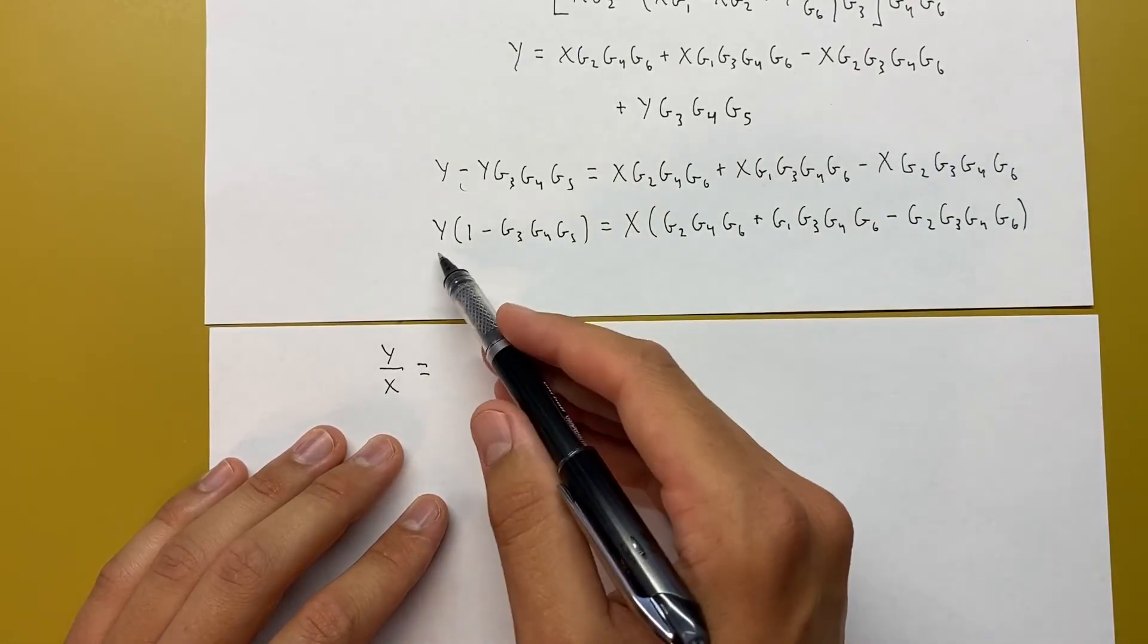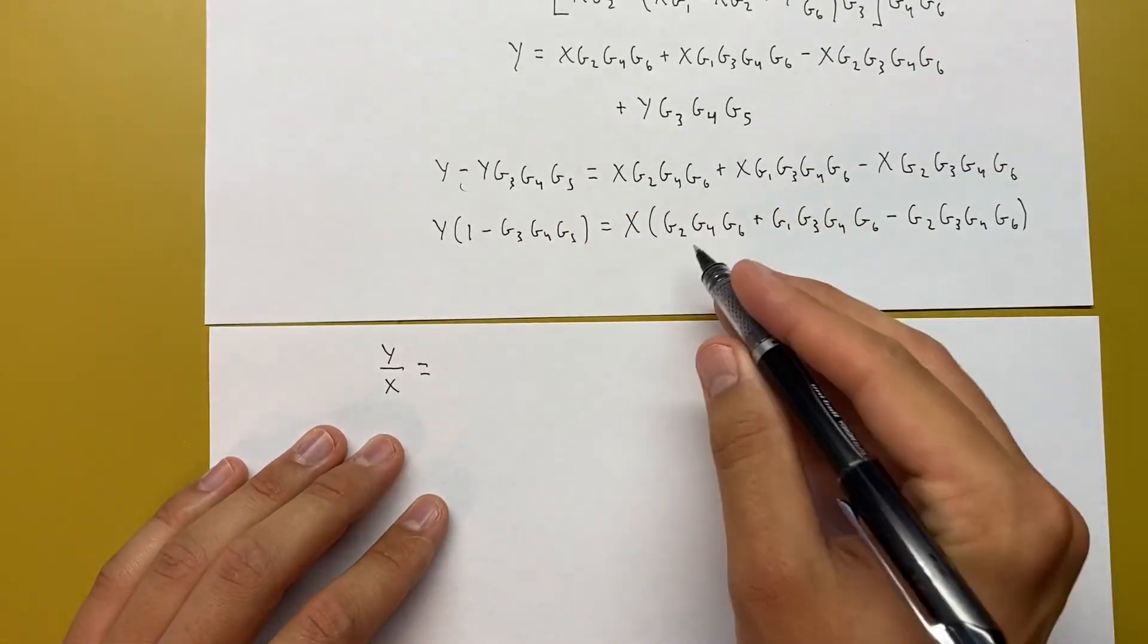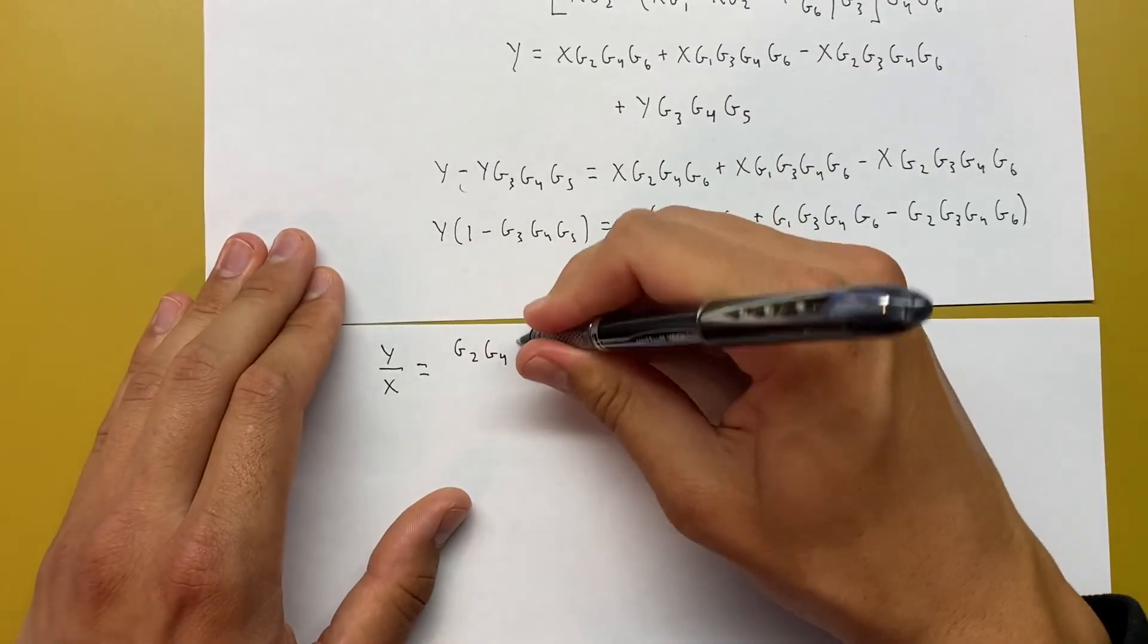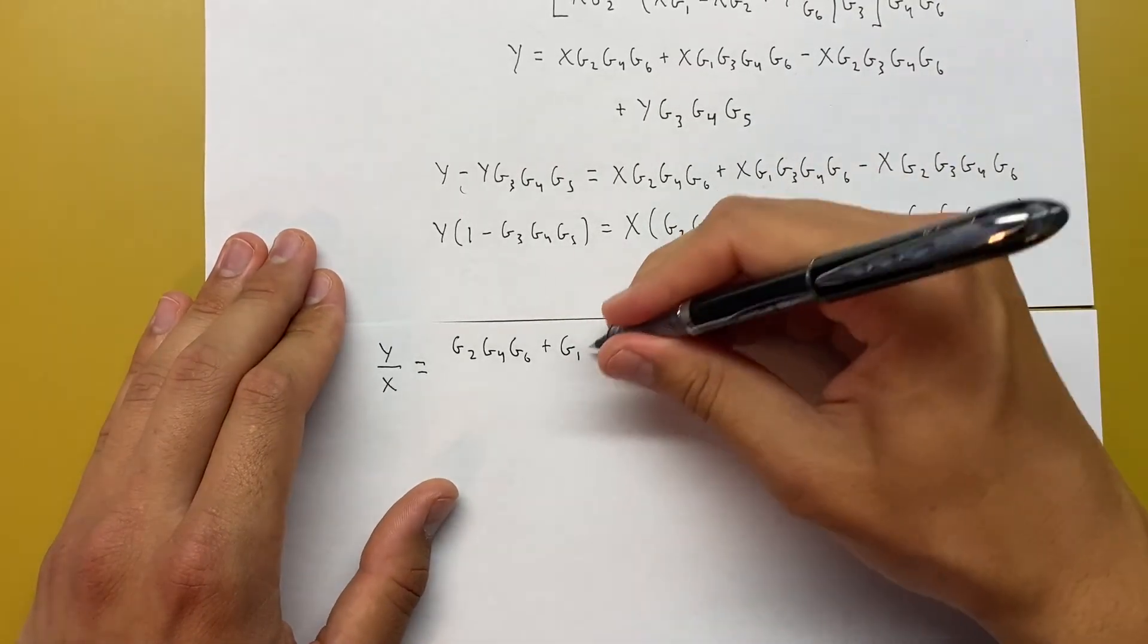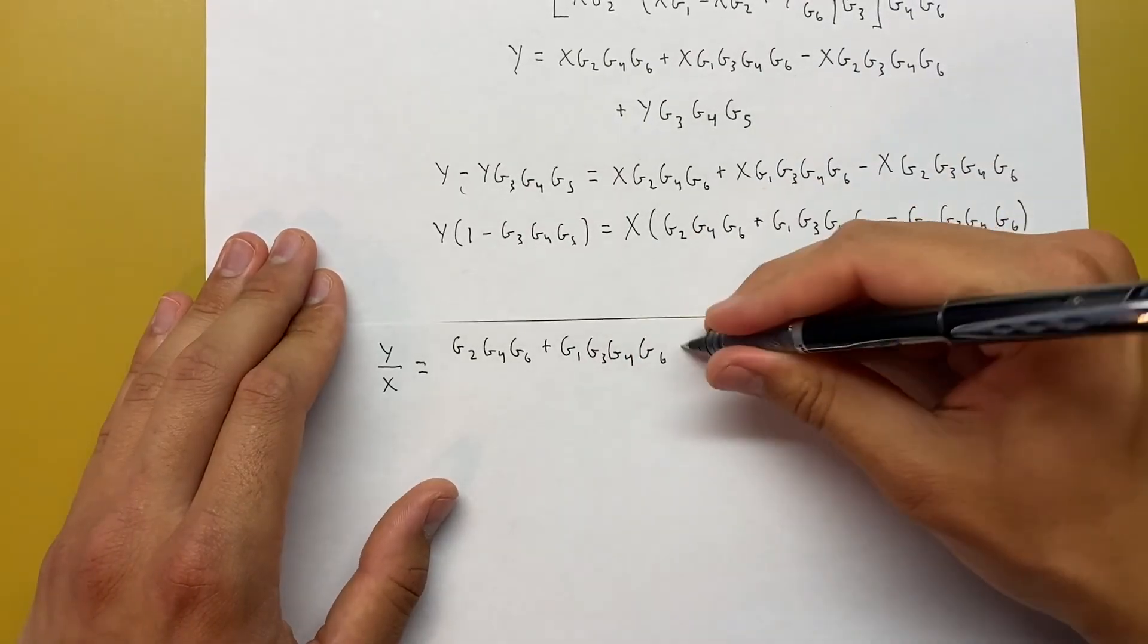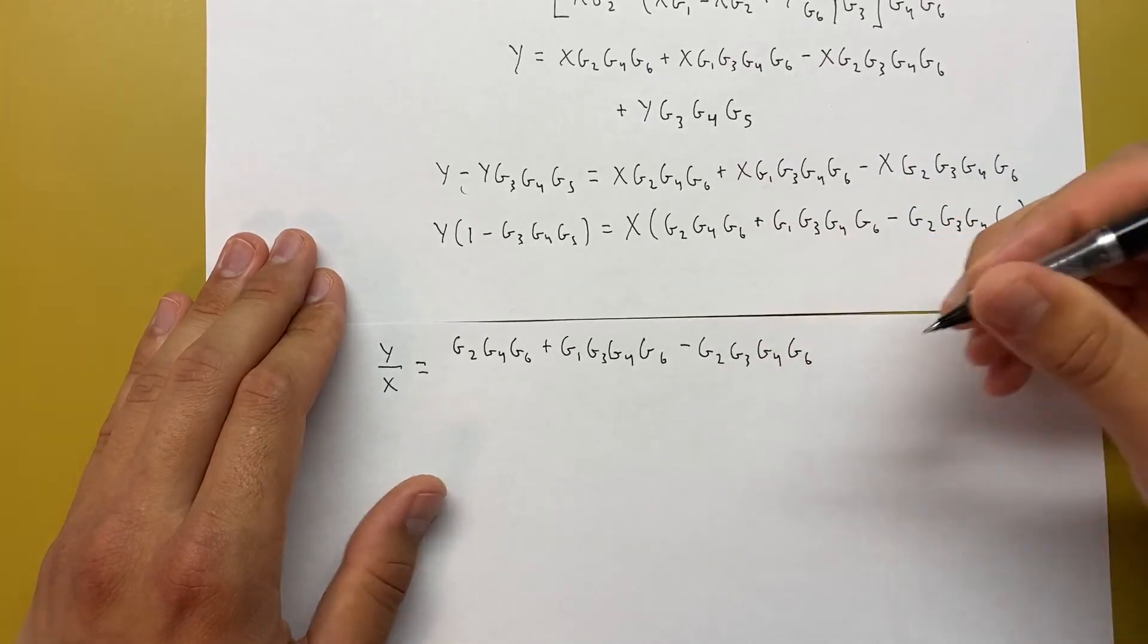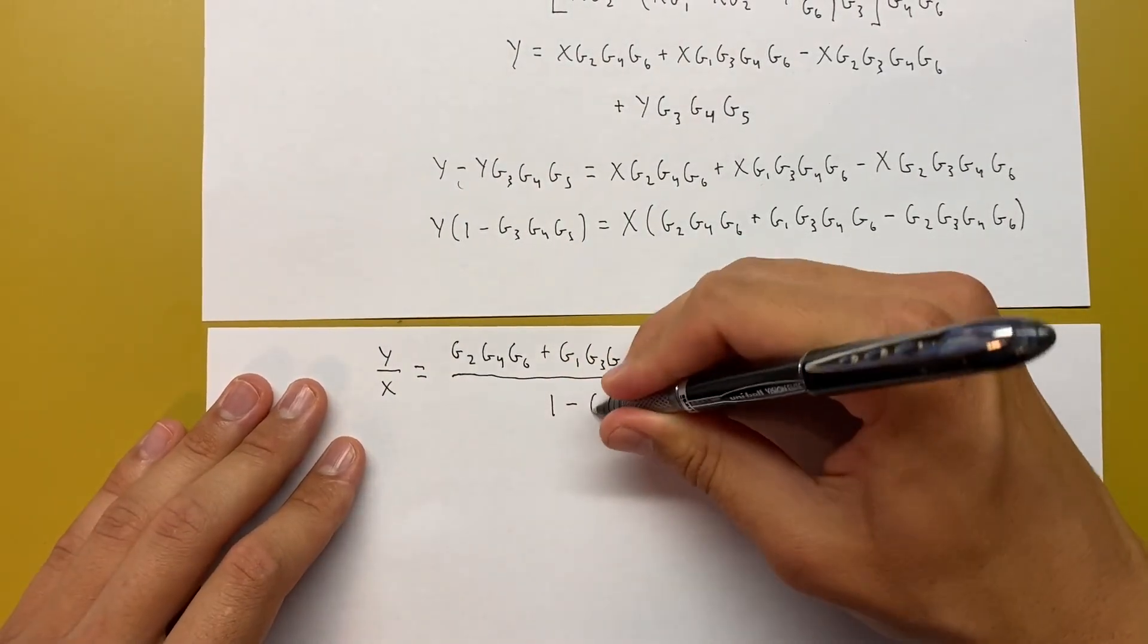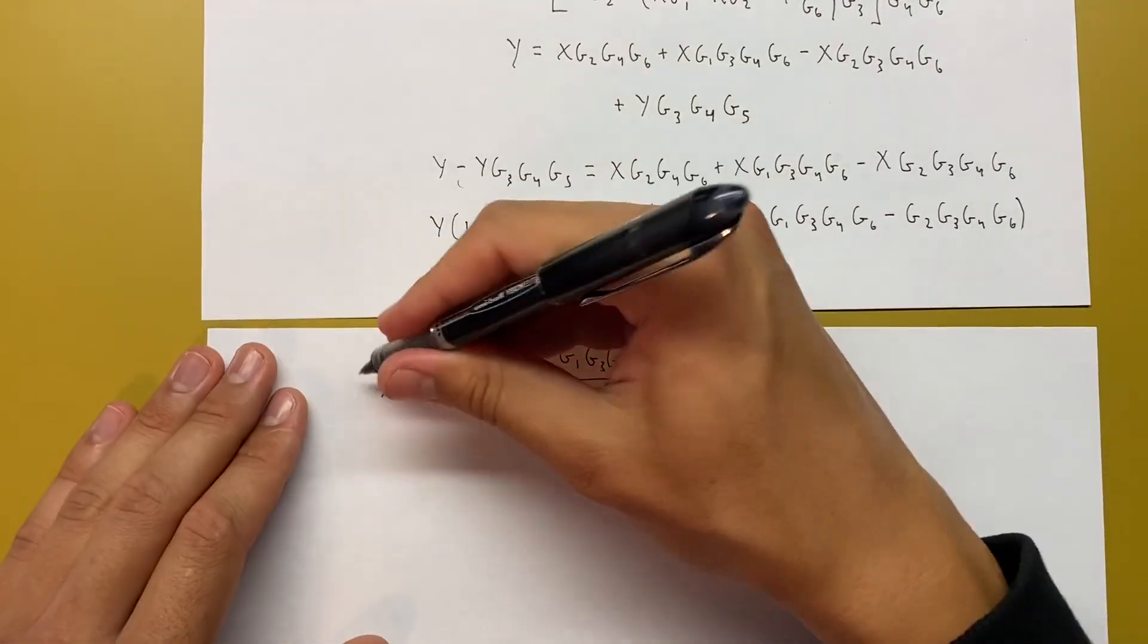G2 G4 G6 plus G1 G3 G4 G6 minus G2 G3 G4 G6, all over 1 minus G3 G4 G5. This is our final answer.